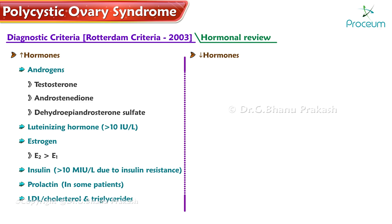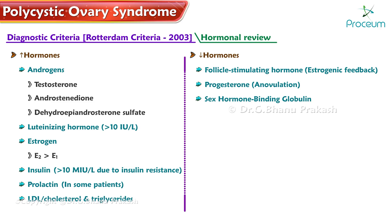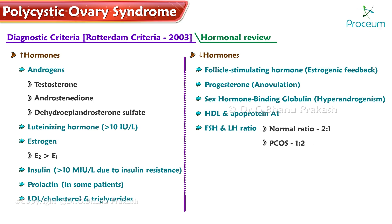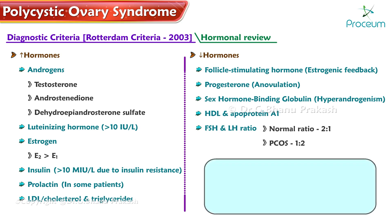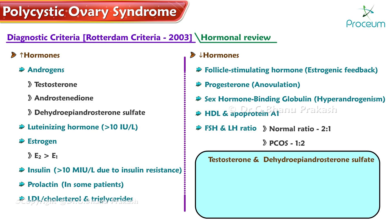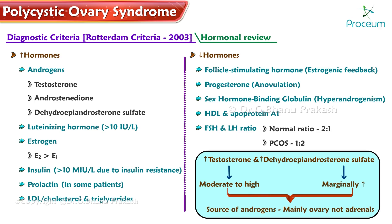Hormones that are decreased include: follicle-stimulating hormone due to estrogenic feedback; progesterone due to anovulation; sex hormone-binding globulin due to hyperandrogenism; HDL and apoprotein A1. The FSH to LH ratio — normal is 2:1, but in polycystic ovary syndrome it is reversed to 1:2. Both testosterone and DHEAS are elevated, but testosterone increase is moderate to high whereas DHEAS is only marginally elevated, proving the source of androgens is mainly the ovary, not adrenals.